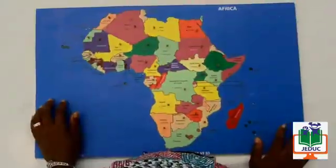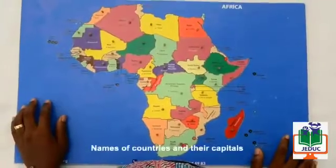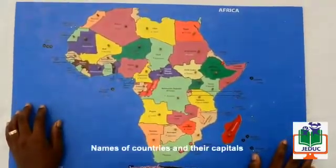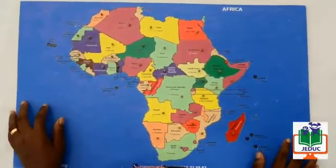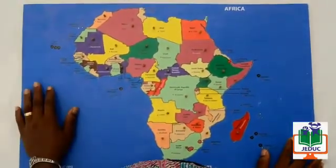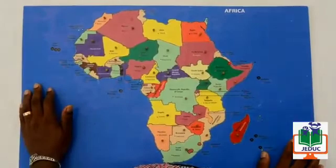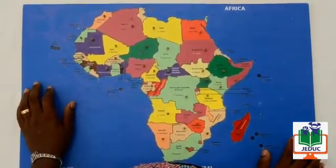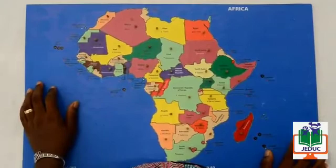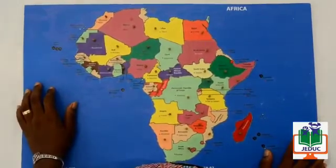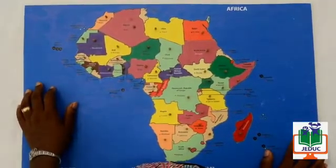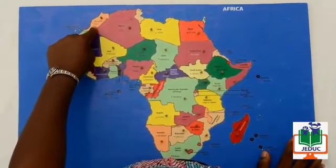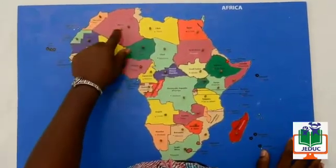Skill number one: names of countries and their capitals. Here, we invite you to read with your child the names of the countries and their capitals like this. Morocco, capital Rabat. Algeria, capital Algiers.